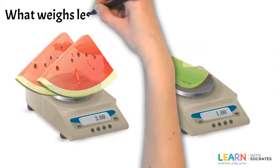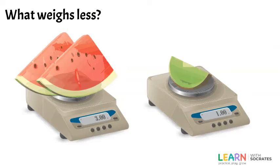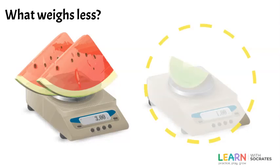What weighs less? Watermelon or kiwi? Look at the scale. The kiwi is only one, so the kiwi weighs less because the watermelon weighs three.